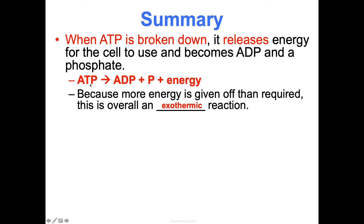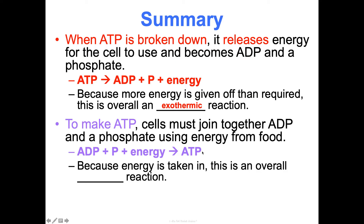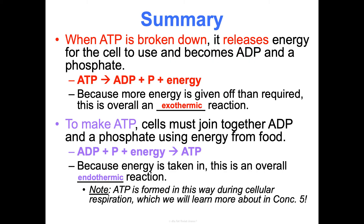Now, to make more ATP, cells are going to join together ADP and a phosphate using energy from the food they ate. It takes a lot of energy to do this because ATP is unstable and ADP is more stable, so we're going to have to add in some energy to make ATP. Because we're adding in more energy than is going to be released from forming the ATP bond, the overall reaction is considered endothermic. We make ATP this way during cellular respiration — in concept five, we're going to be talking about making ATP so the cell can use it.